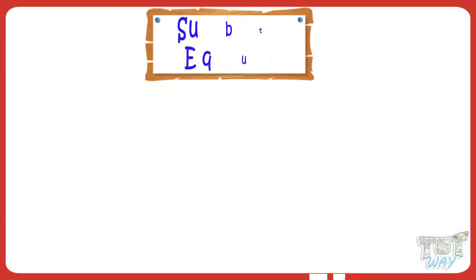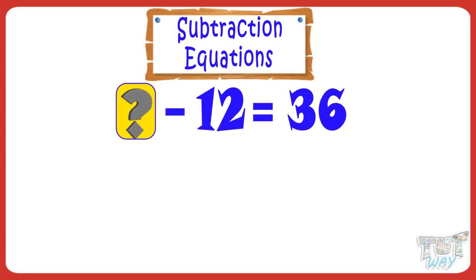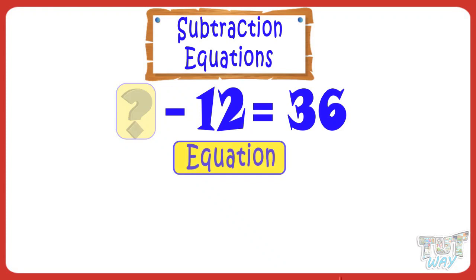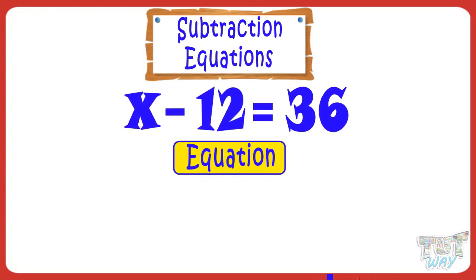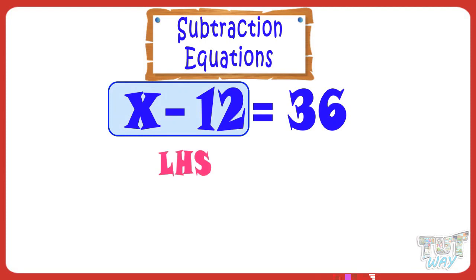Let's take another example — a subtraction equation. If we subtract 12 from a number, it gives 36. What is the number? We can write this mathematical question in the form of an equation: X minus 12 equals 36. That is, if we subtract 12 from X, it will give 36. Now we have to find the value of X. Here, X minus 12 is LHS and 36 is RHS.